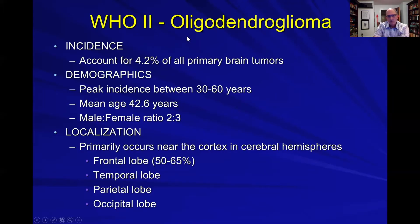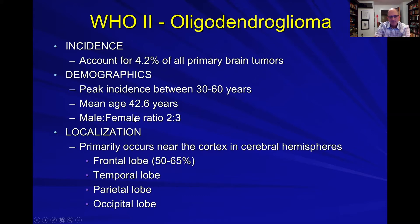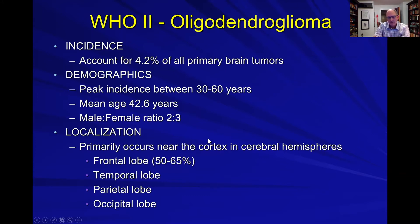The oligodendrogliomas. The typical one is a grade two. These account for about four percent of primary tumors. Peak incidence is in the 40s and a little bit more common in females. They occur more commonly supratentorally, perhaps only supratentorally. The unique thing about them is they are more commonly seen closer toward that cortical border near the cortex, which is probably why they more frequently present with seizures.